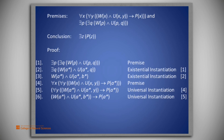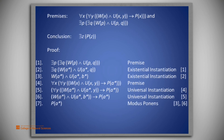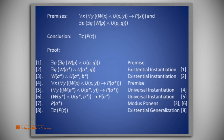Now from lines three and six we are allowed to use modus ponens to obtain P(a*) on line seven. Since a* arose from an existential instantiation, we are allowed to do an existential generalization from line seven to conclude: there exists z such that P(z) on line eight.